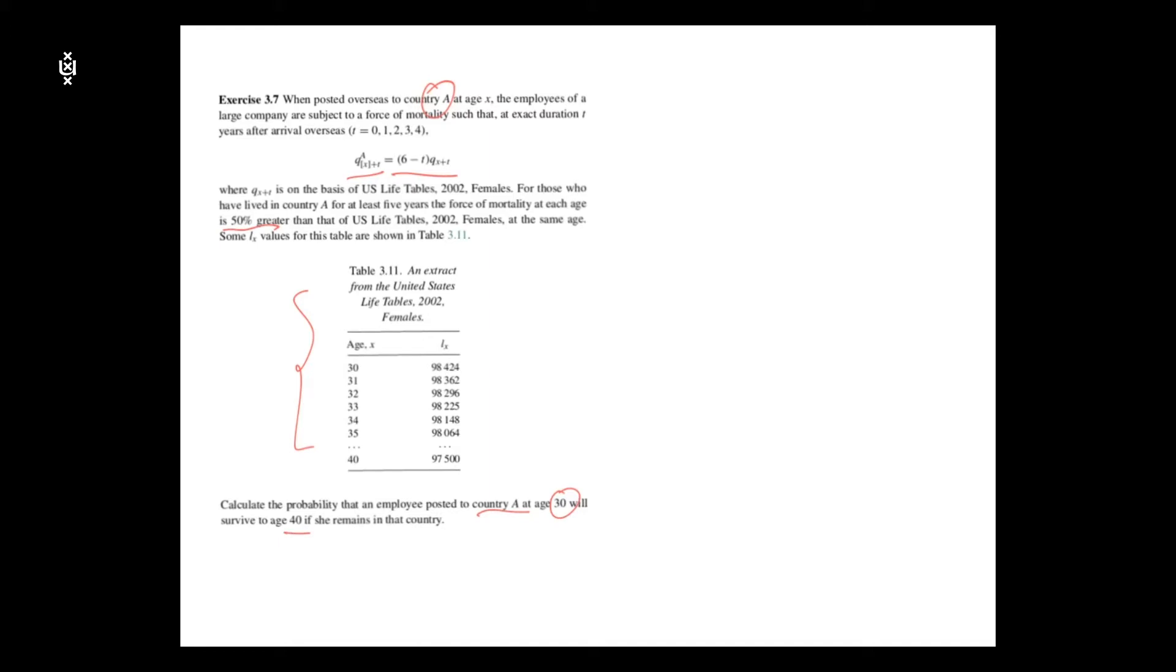Expressing this using our probability notation, what we want is the probability that a life which is age 30 and is just selected will survive another 10 years to reach age 40, and this is in country A.